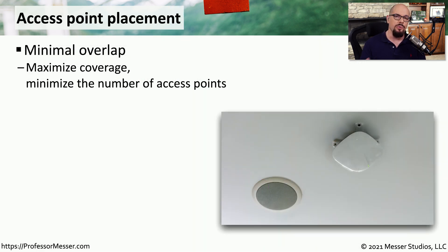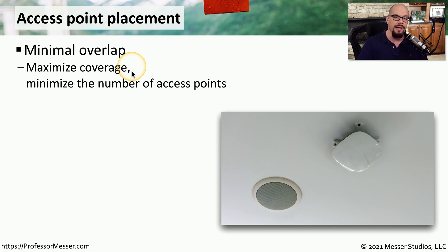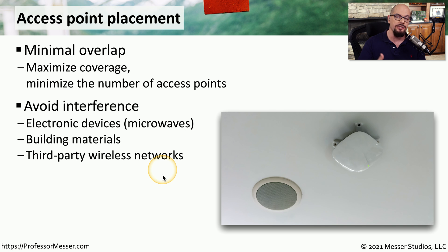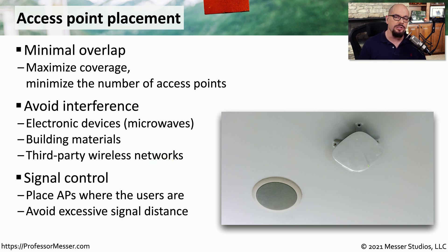When installing a new access point, you want to place it in the right location with minimal overlap with other access points — not directly next to each other, but positioned to maximize coverage in your environment. This will also minimize the number of physical access points needed, ultimately saving you money. Avoid nearby electronic devices that could create interference, parts of the building where signals could be absorbed, and third-party wireless networks that could cause additional interference. Place access points as close as possible to users while ensuring the signal doesn't extend too far outside your work area.